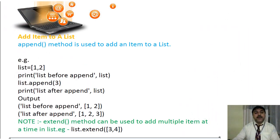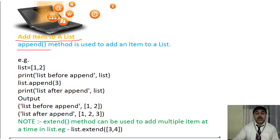One more thing I am going to show you in today's discussion is how to add an item — add means append. This is an append function to be used. We can use the append function in a list to add an item. If you want to add an item, we can use this particular append function.